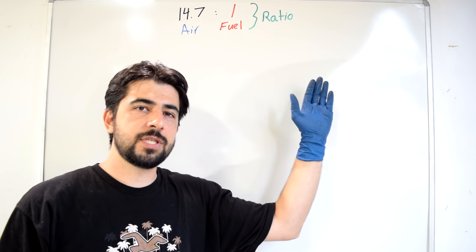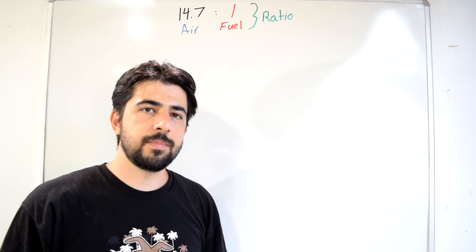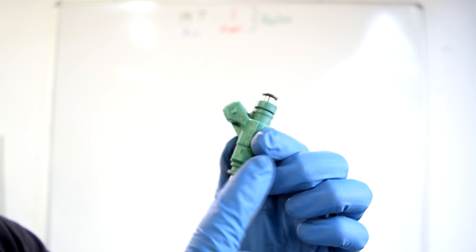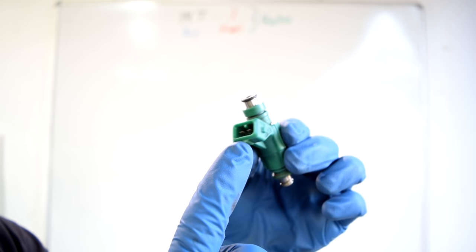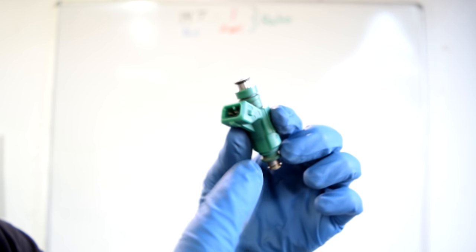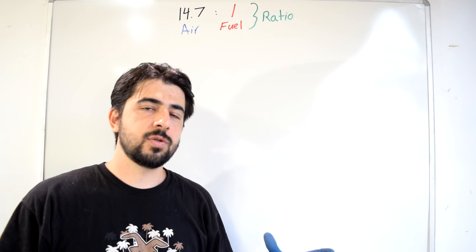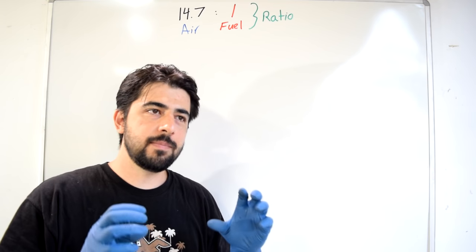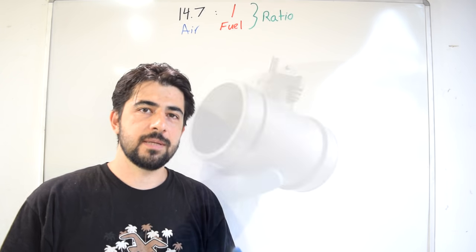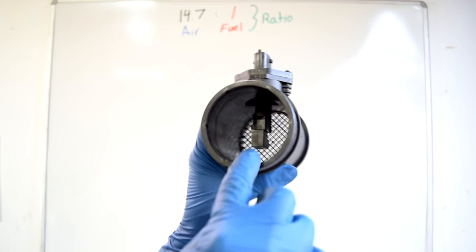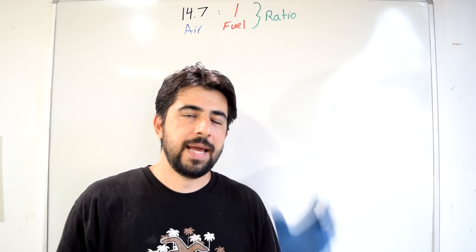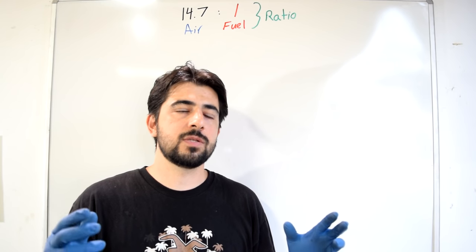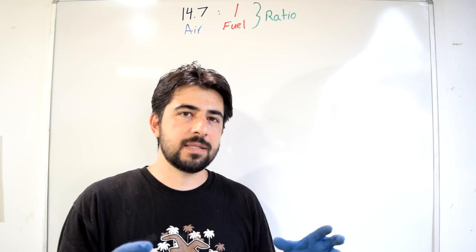The way this exact ratio is achieved under all conditions is through your car's computer. Your car's computer controls the amount of time your fuel injectors stay open, therefore controlling the amount of fuel going through your engine. Your car's computer doesn't control the amount of air entering your engine exactly, but it has sensors that precisely measure it — usually through a MAF sensor. Your MAF sensor and the fuel injector pulse width are what the computer uses to mix the correct air-fuel mixture.